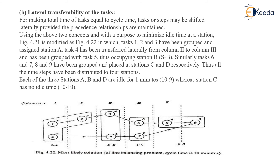In the modified diagram, tasks 1, 2, and 3 have been grouped along with task 5, thus occupying station B. Similarly, tasks 6 and 7, and tasks 8 and 9 have been grouped and placed at stations C and D respectively. Thus all 9 steps have been distributed across 4 stations. Each of the 3 stations A, B, and D are idle for 1 minute (10 minus 9), whereas station C has no idle time. Based upon this we can find out the idle time and which tasks will be completed in a particular time. Thank you.